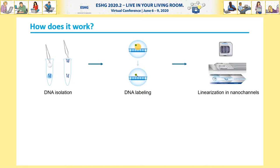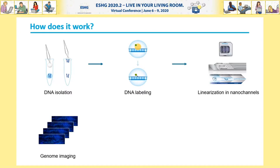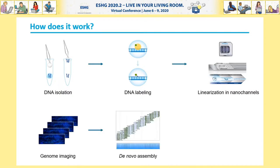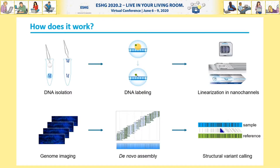The labeled DNA molecules are added to BioNano chips, where they are linearized in nanochannels so that each nanochannel contains only a single long molecule. These labeled molecules are flushed through the nanochannels continuously, and all channels with all their molecules are imaged. The images are translated into digital molecules, which are then used to perform a de novo assembly of all these long molecules. This results in a map of our patient or sample, which is compared to the label pattern expected from the reference genome, enabling us to identify structural variants.